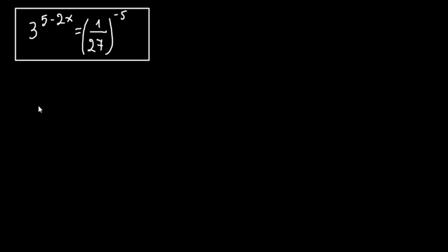Hello everyone! Today we're going to solve this equation with exponents. We have 3 raised to the 5 minus 2x equals the fraction 1 over 27, and all of this raised to minus 5. Let's start to see how we can solve this.